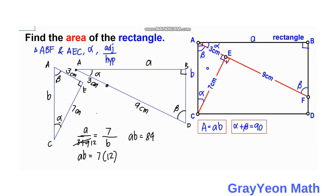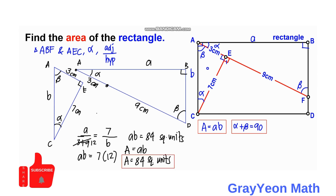So 84 square units is our answer, and since the area equals AB, the area equals 84 square units. Thank you for watching until the end of the video. Please like the video if you liked our solution, and don't forget to subscribe to the channel and hit the bell icon so you will be updated for more math videos like this. Thank you, bye.